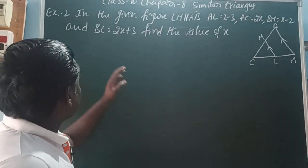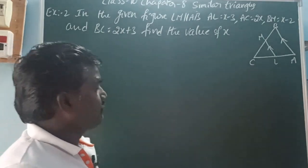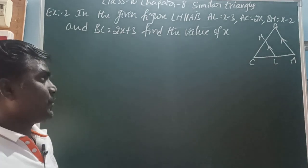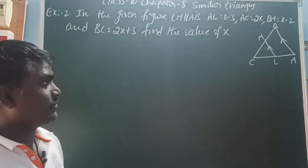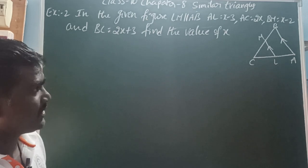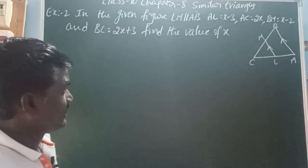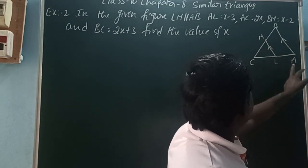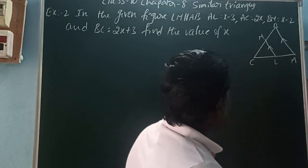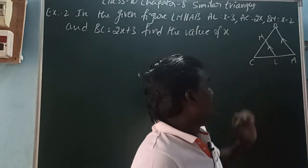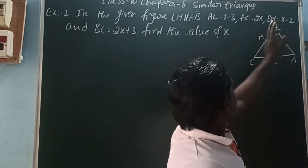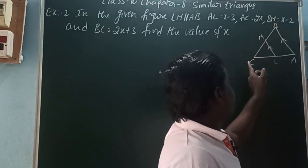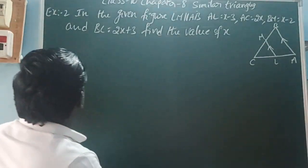Example 2: In the given figure, LM is parallel to AB. AL equals x minus 3, AC equals 2x, BM equals x minus 2, BC equals 2x plus 3. CL equals AC minus AL equals 2x minus (x minus 3) equals x plus 3. CM equals CB minus MB equals (2x plus 3) minus (x minus 2) equals x plus 5.